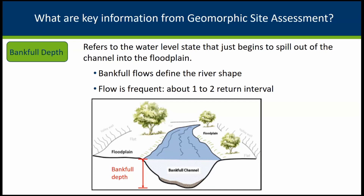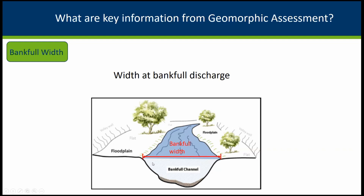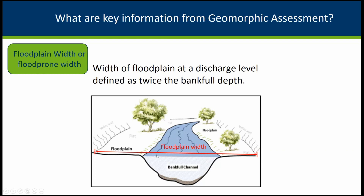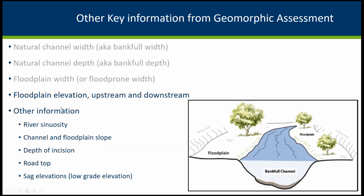What kind of information do we get from the geomorphic assessment? One key one is the bankfull depth — the point where the natural stable system overtops its bank and activates the floodplain. The other is the bankfull width — the width of the channel at which it starts to overtop and activate the floodplain. Then the floodplain width or flood-prone width is the width of the active floodplain where we can put floodplain culverts. We also get floodplain elevation upstream and downstream, river sinuosity, channel slope, how much it's unstable, the bank height ratio giving us the depth of incision, and the road top and sag elevations.